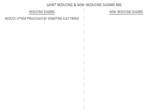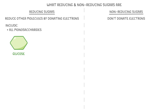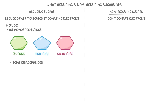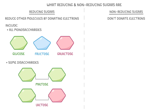The term non-reducing sugars basically means that they don't donate electrons the way that reducing sugars do. Reducing sugars include all monosaccharides — so for instance glucose, fructose, and galactose — but also some disaccharides as well, like maltose and lactose.